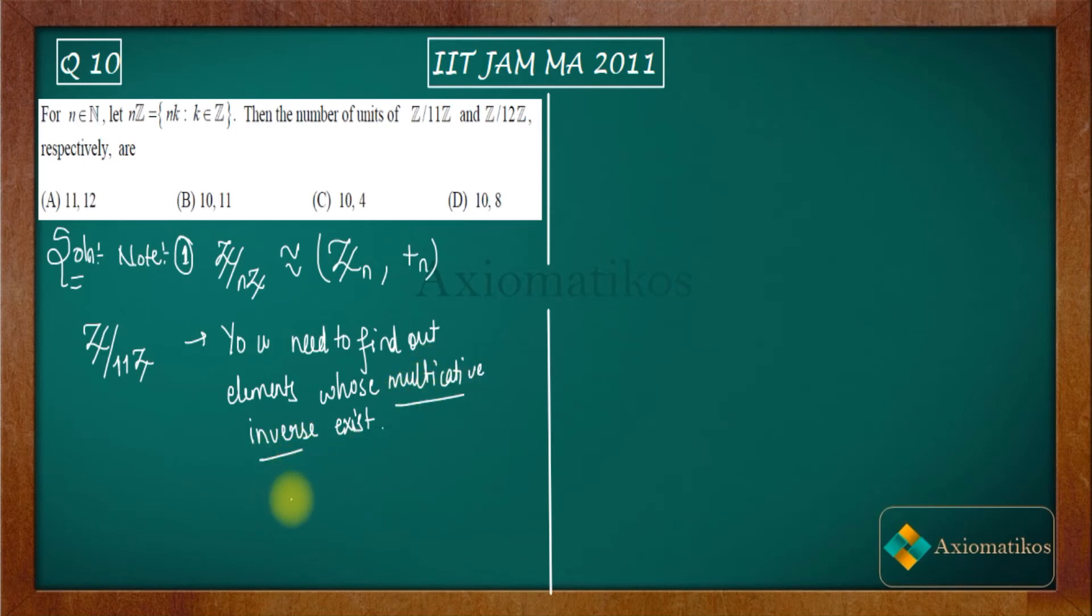Now you know from note number one that Z/11Z is actually isomorphic to Z11 and Z/12Z is actually isomorphic to Z12. So if we calculate units inside these two, then we will get units inside them.